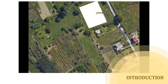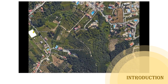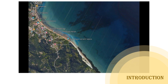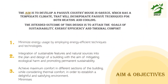Greece was chosen as the location due to its temperate climate, which is characterized by hot summers and cold winters. Traditional passive design in a temperate climate zone emphasizes cooling in summer while minimizing solar heating in winter. The aim of this study is to develop a passive country house in Greece incorporating passive techniques for both heating and cooling. The objectives are to minimize energy usage by employing energy-efficient techniques and technologies, integration of sustainable features and natural resources, and achieving maximum comfort while considering thermal comfort.